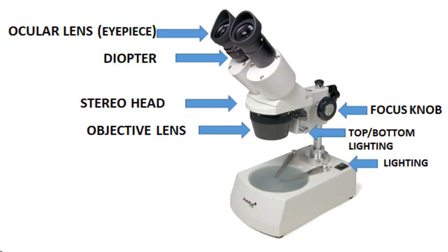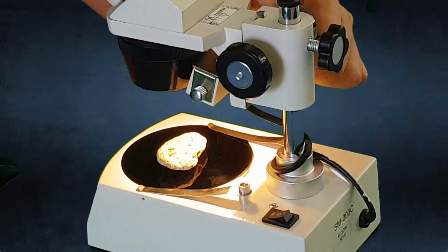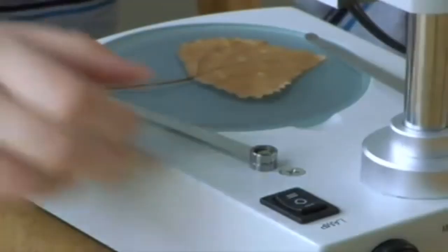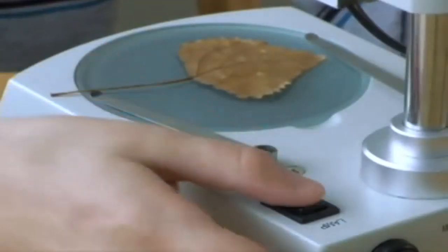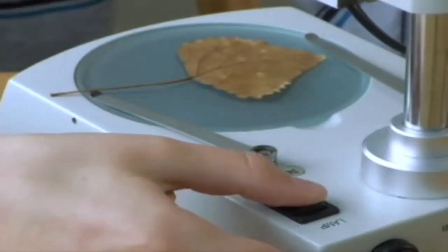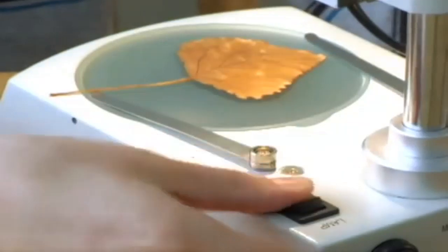Lighting. Many microscopes have both top and bottom lighting. The top lighting shines down on the specimen and reflects light off them. The bottom lighting transmits light up through the stage to show translucent specimens.